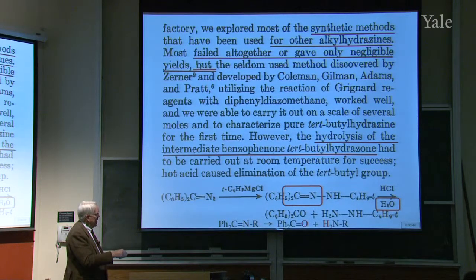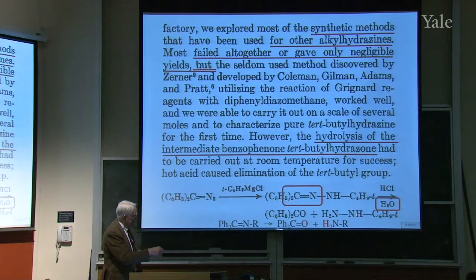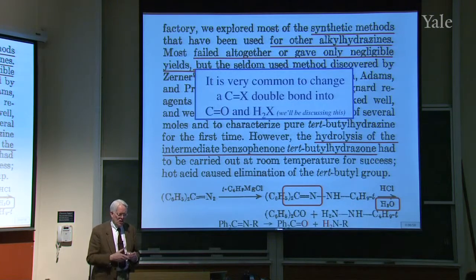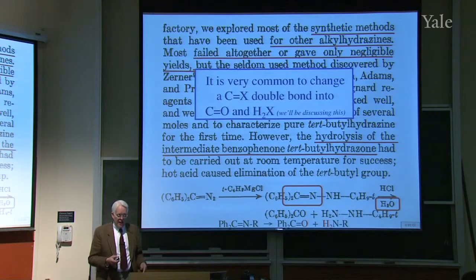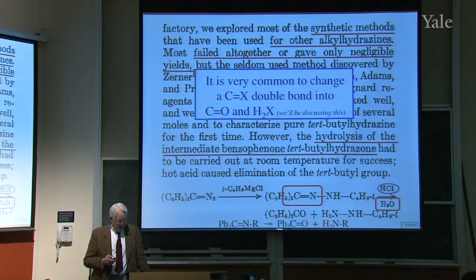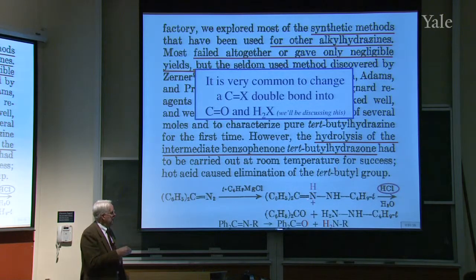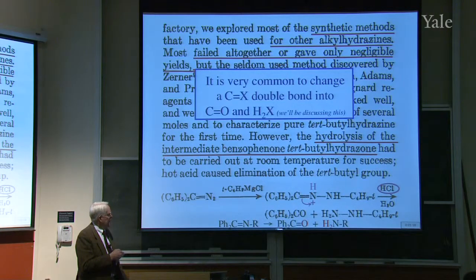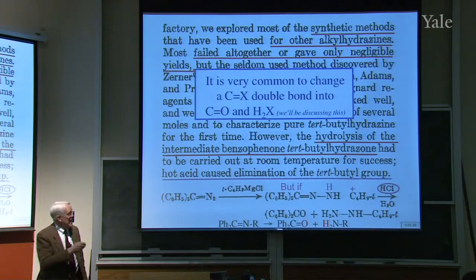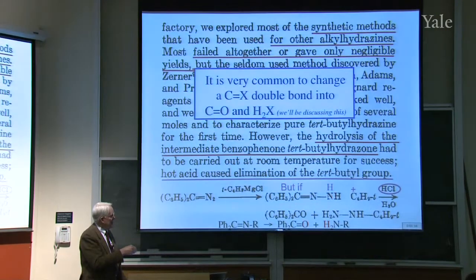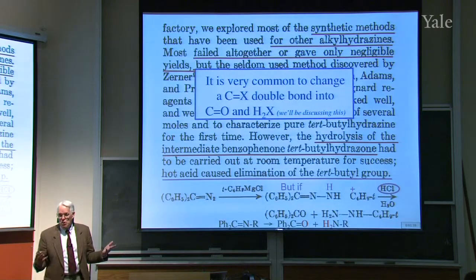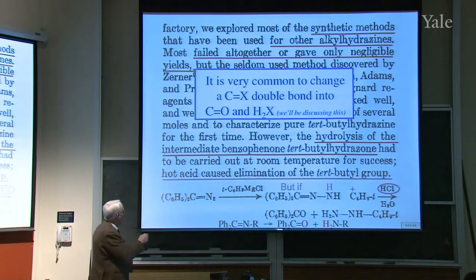Hydrolysis is the intermediate benzophenone. The idea is to break a CN double bond and put water in there to put oxygen on the carbon, the H2 of water on the nitrogen, and you have the amine you want. It's very common to change CX double bonds into CO double bonds and H2X. This reaction is catalyzed by acid. The way it happens is you put a proton on this nitrogen. Then that resonance structure has the cation on the carbon. That can add water and get the oxygen on there.